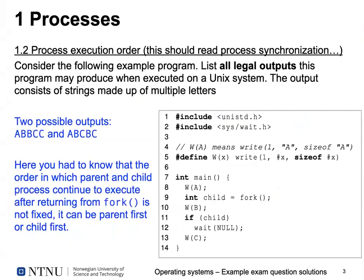The second question was also titled 'process execution order' — we could have called it process synchronization. We have another example program that uses a macro which encloses the argument in double quotes to serve as a string. Essentially we have a write macro that writes a string with its size to standard out. We use it twice to write 'a', three times to write 'b', and also to write 'c'. In between we do some fork.